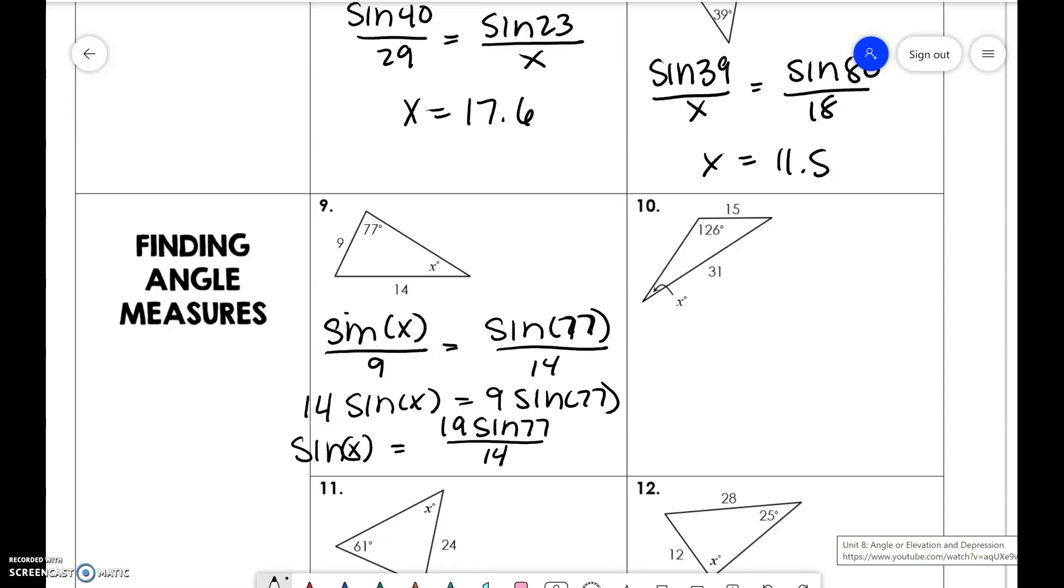Let's see. So x is equal to sine inverse of 9 sine of 77 all over 14.